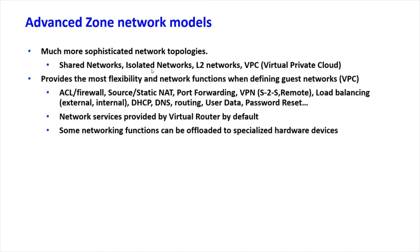Advanced zones provide much more sophisticated network topologies, offering more flexibility and networking functions. We'll cover the differences between each network type — what is available in a VPC but not in an isolated network, for example. Networking services range from ACLs and firewall, to source NAT, static NAT, port forwarding, site-to-site VPN, remote VPN, load balancing, and password-protected functionalities.